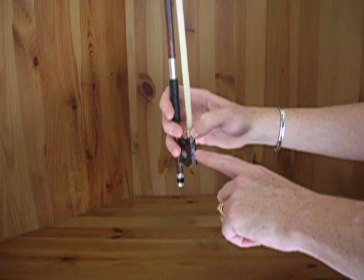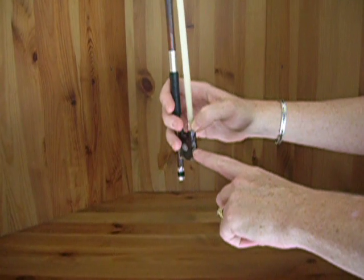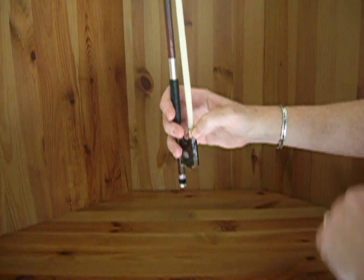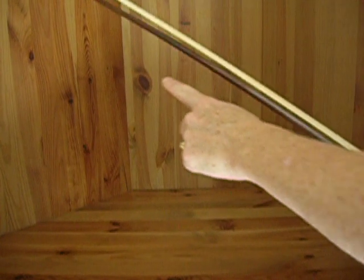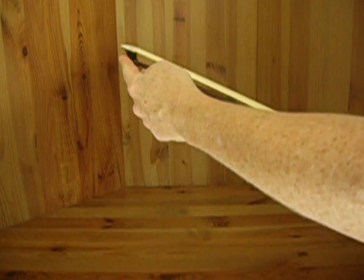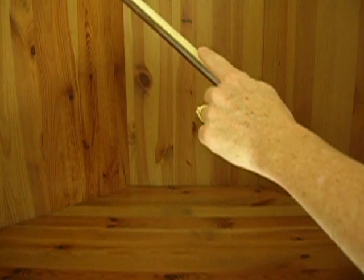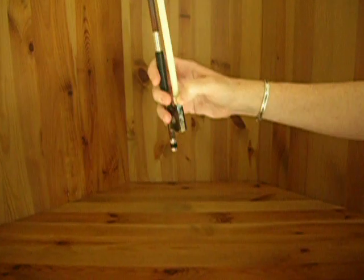First of all, this is called the frog of the bow, and we hold the bow with our right hand. This down here is the tip of the bow, and here is the hair, and we do not touch the hair because we want to keep it clean.